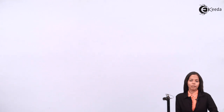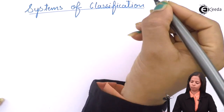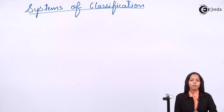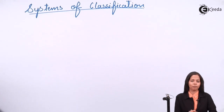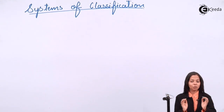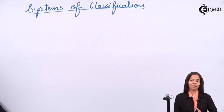The next topic we are going to study is systems of classification, the most important part of taxonomy. The very first scientist who started classifying organisms was Carolus Linnaeus, the father and founder of taxonomy. He first started with the system of classification and divided the organisms present on Earth into two categories: Kingdom Plantae and Kingdom Animalia. Because two categories were formed, the system was named two-kingdom classification.